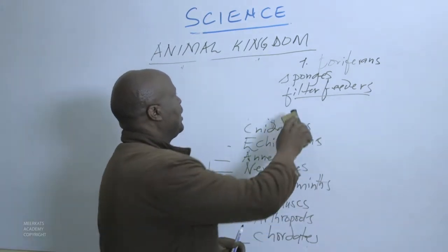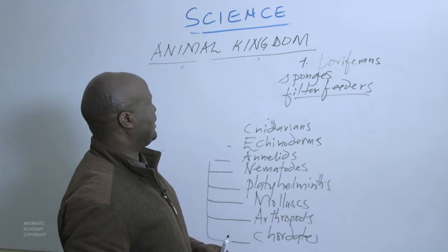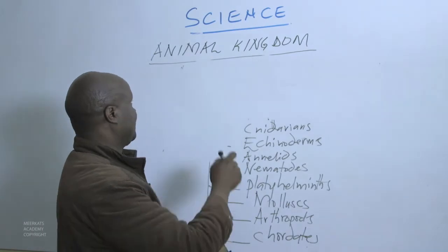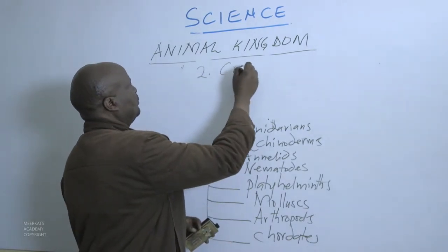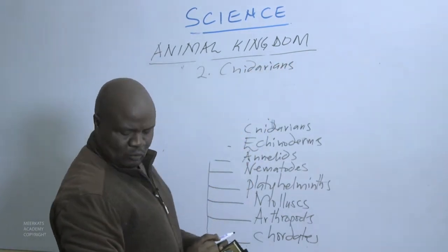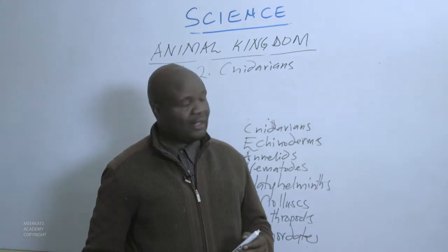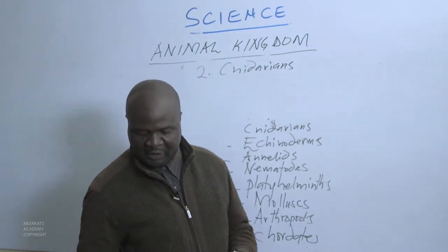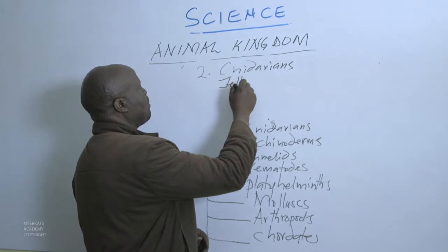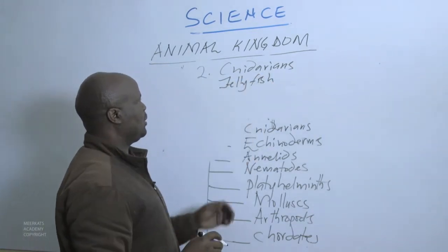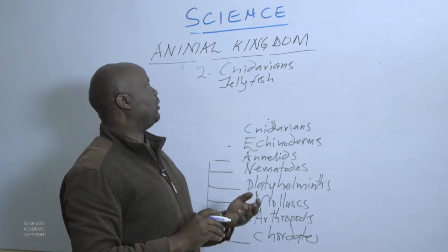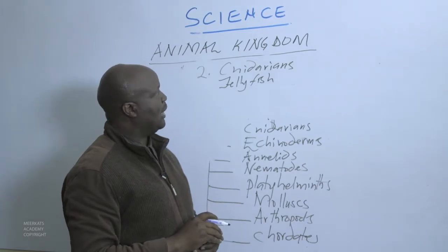We can go to the second group, called Cnidarians. With the Cnidarians, we have animals famously found in this phylum, such as the jellyfish. A jellyfish is an example of an animal that belongs to this phylum called Cnidarians.